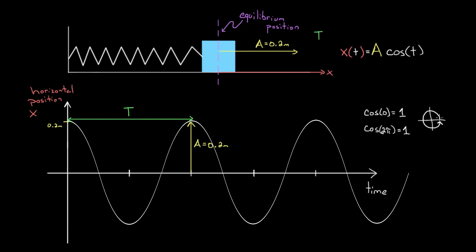So if something rotates through an angle of two pi, the whole process has reset. But that would mean this function resets every two pi seconds—at t equals zero the function was one, and at t equals two pi the function is one again. That would mean the period for cosine of T is two pi, but our period isn't necessarily two pi.